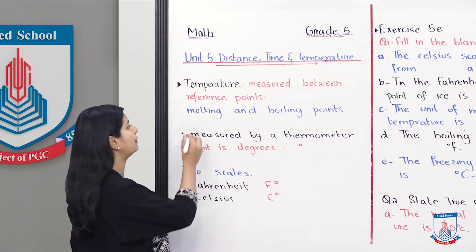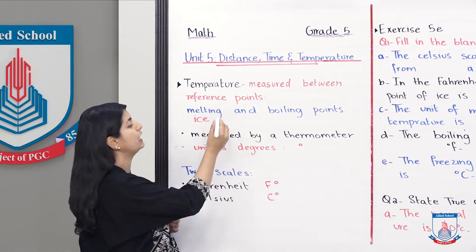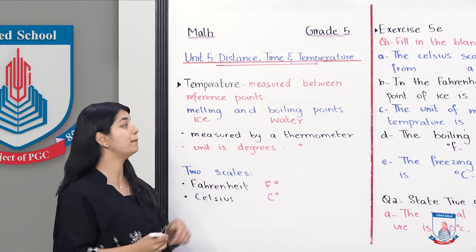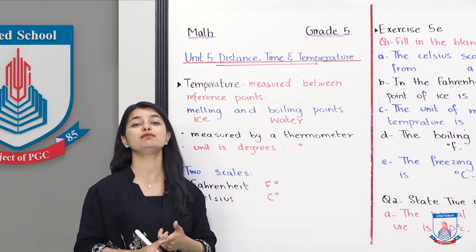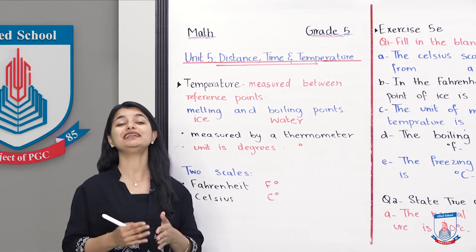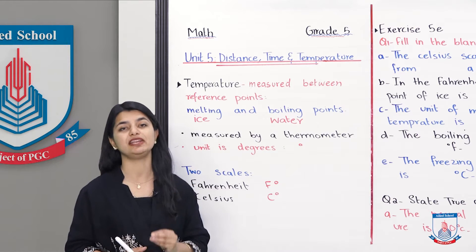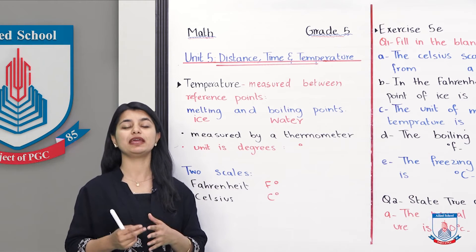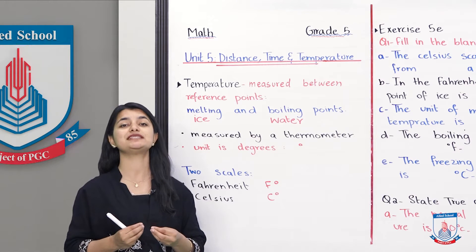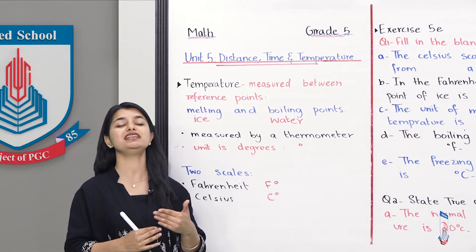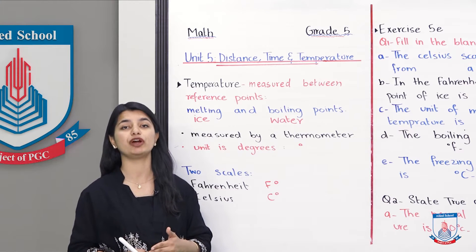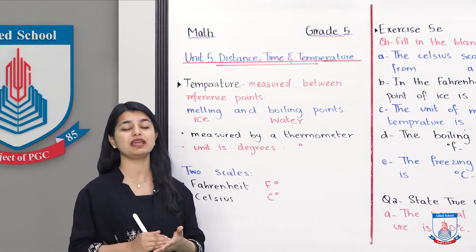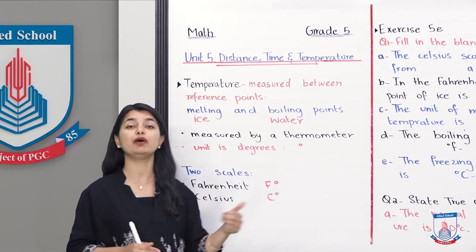The melting point uses ice and the boiling point uses water. The melting point of ice is the same as the freezing point of water, which is zero degrees centigrade. So melting point of ice and freezing point of water are the same thing. The boiling point of water is 100 degrees centigrade.